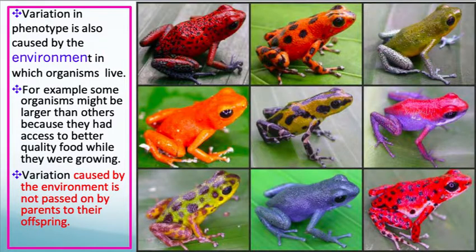Variation in a phenotype is also caused by the environment in which organisms live. So much of the phenotype of an animal and its success is dependent on the environment. For example, some organisms might be larger than others because they had access to better quality food while they were growing up. Variation caused by the environment is not passed on by parents to their offspring — the diet comes from the environment, so environmental circumstances help give variation into the population, but that's not the type of variation that gets passed on to offspring.